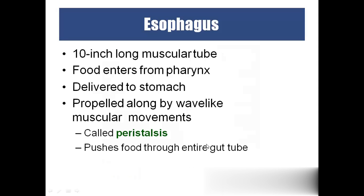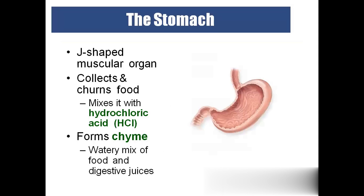The esophagus is a 10-inch-long muscular tube that connects the oral cavity to the stomach. Its sole function is to transport food from the mouth to the stomach. The movement in the esophagus is called peristalsis, which carries food from the mouth to the stomach. The stomach is a J-shaped structure.